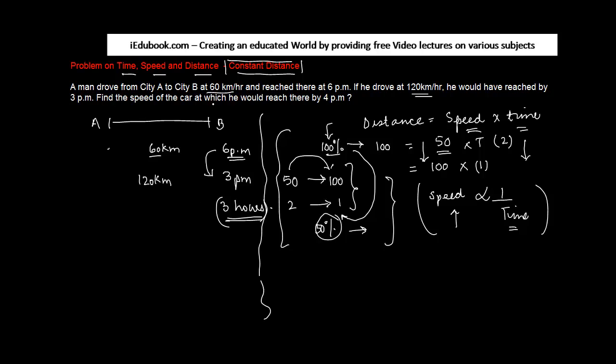Find the speed of the car at which he would reach there by 4 pm. We need to find out what should be the speed of the car to reach at 4 pm. Now in these cases, as I told you, the distance is constant. So we need to play between speed and time. What is the increase in speed here? The speed is increased from 60 to 120 or 100 percent. It has been doubled. So if the speed is doubled, the time taken should be reduced, and how much? We saw that it has to reduce by 50 percent.